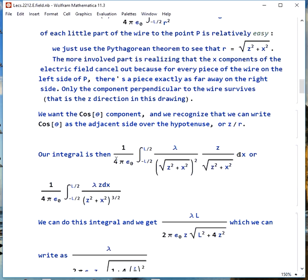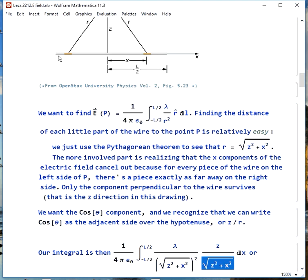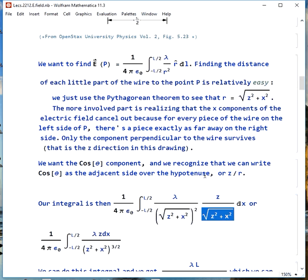So the integral we want to do is our constant. We go from negative l over 2 to l over 2, since we're in the center of the wire. We have lambda over, this is our r squared, our distance. And then our cosine theta looks like z over r, which is that. And we're integrating over x, because that's where we're moving along our charge.